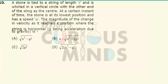A stone is tied to a string of length L and it is whirled in a vertical circle with the other end of the string at the center. At a certain instant of time, the stone is at the lowest point and its velocity is equal to U. We need to find the magnitude of the change in velocity as it reaches the horizontal position when the string is horizontal.